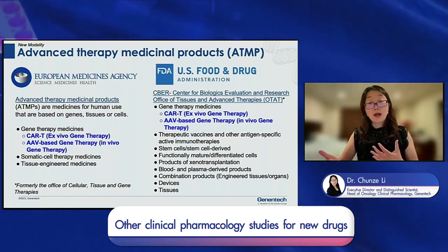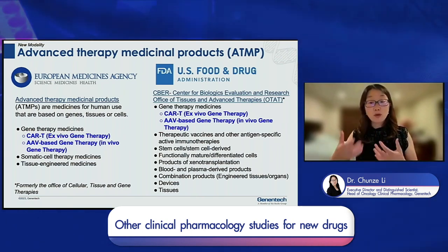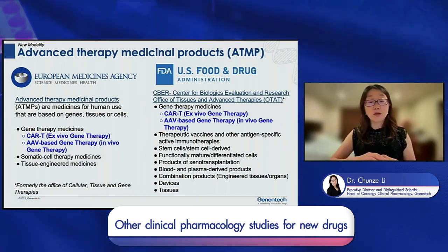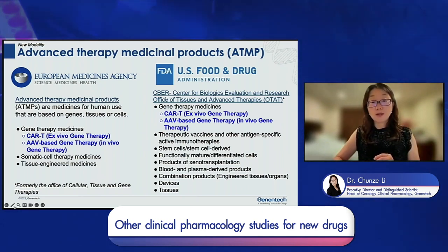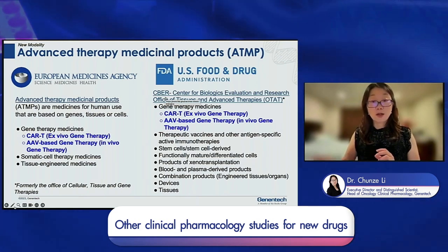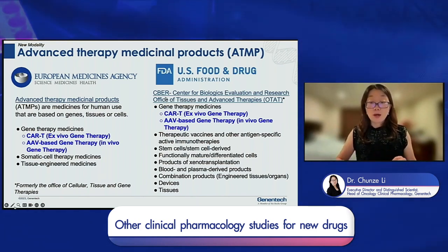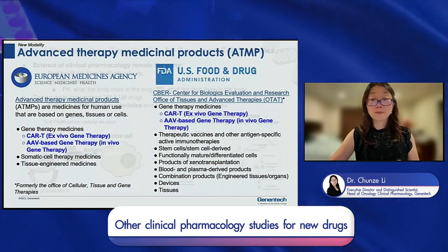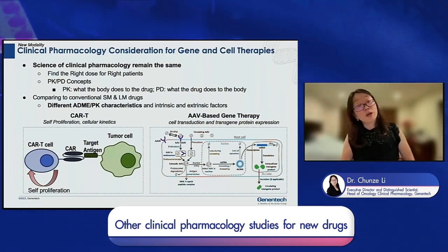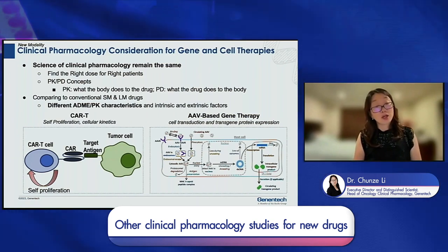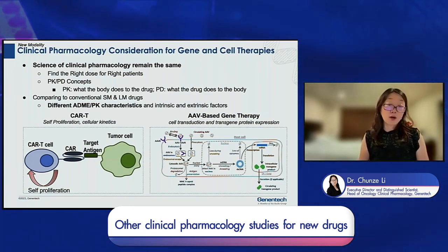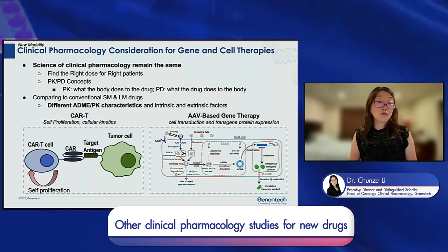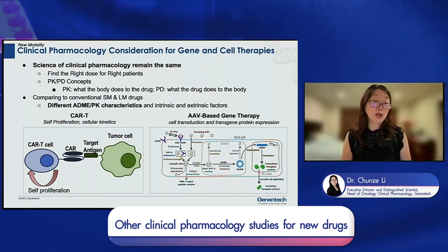I will mainly focus on CAR-T as an ex vivo gene therapy and AAV-based gene therapy as in vivo gene therapy. In the US, the FDA reviews these products through CBER — the Center for Biologics Evaluation and Research — rather than CDER, specifically through the Office of Tissue and Advanced Therapies. The science of clinical pharmacology remains the same for these new modalities: the goal is still to find the right dose for every patient. PK describes what the body does to the drug, and PD describes what the drug does to the body — these concepts remain unchanged.